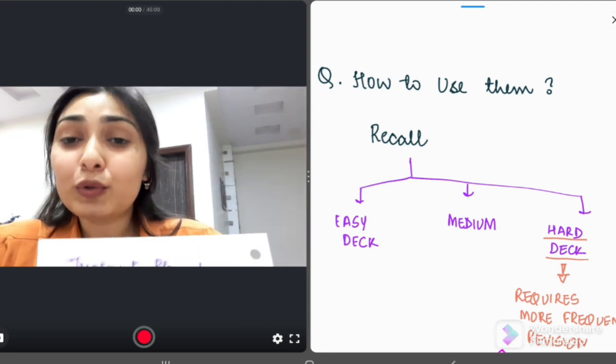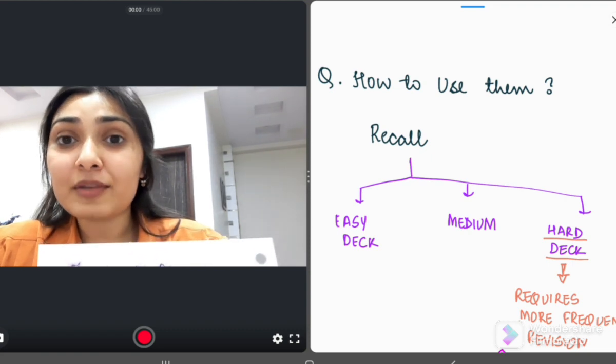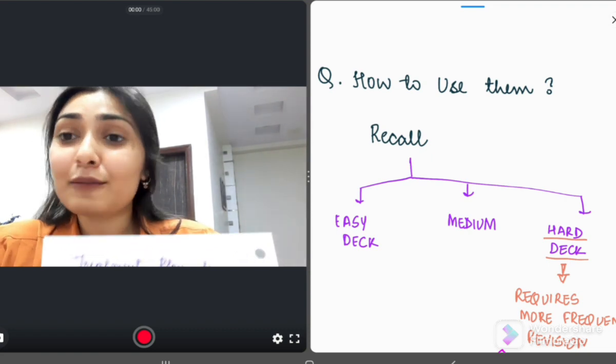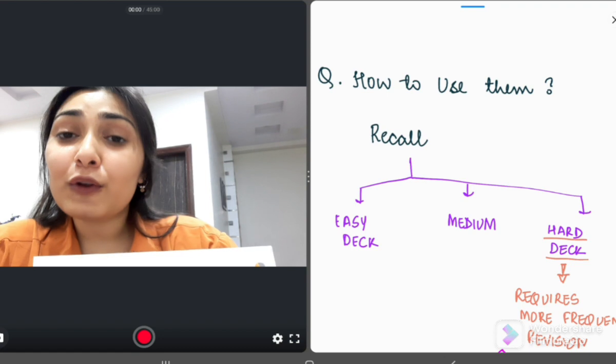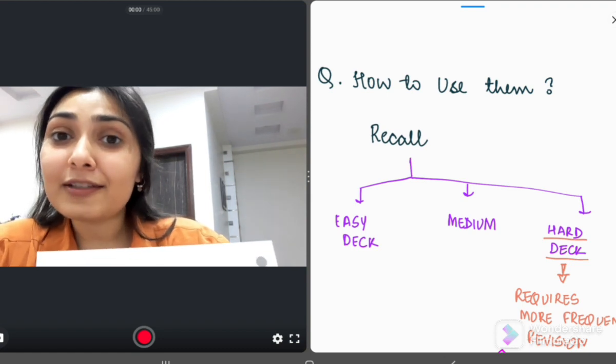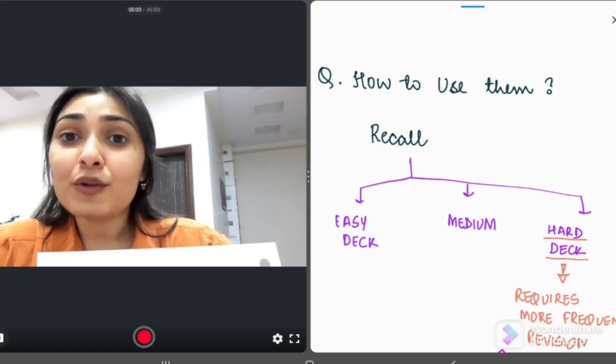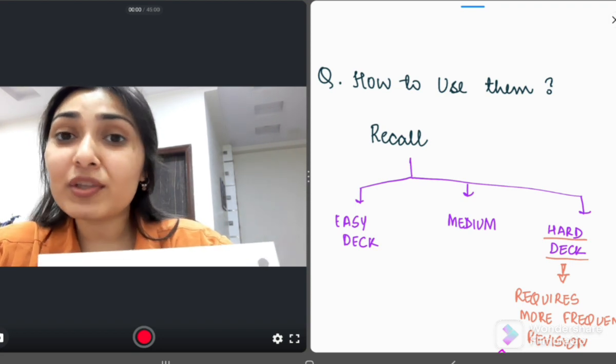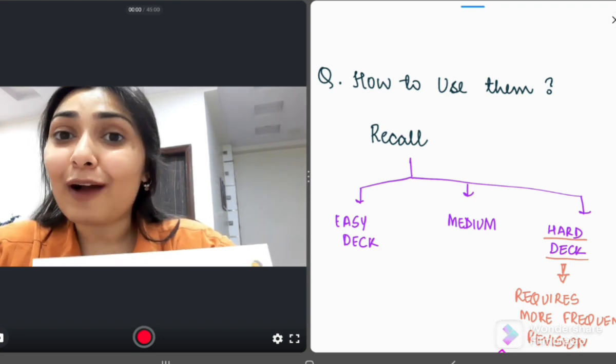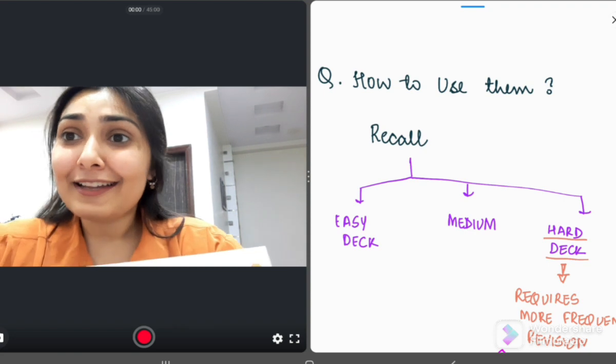Now, the key to revision is you go through hard deck far more number of times as compared to the medium deck and as compared to the easy deck. So, your revision should be focused in the last seven days, seven to ten days should be on the hard deck. And daily also, you can review these hard decks cards so that they downgrade to medium or easy deck.